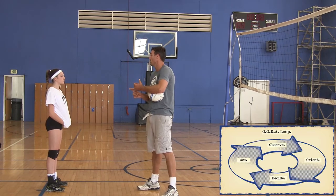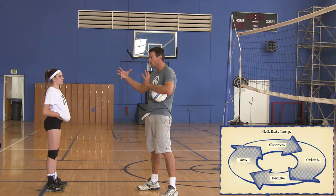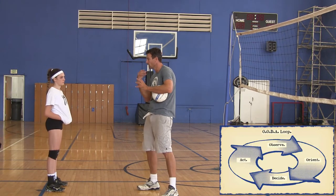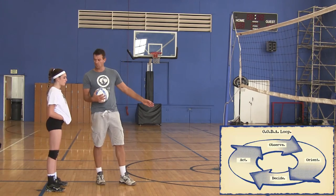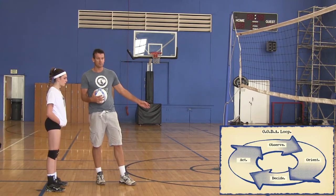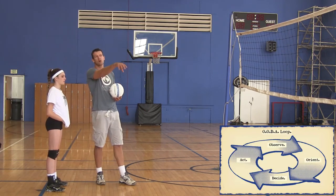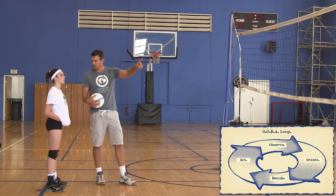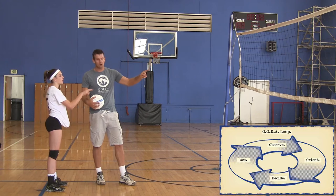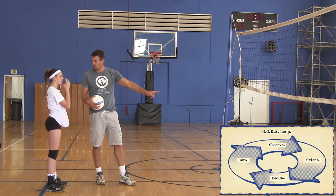Next, what are you going to do is Orientate. Orientate is processing that information. So I'm processing the information — oh, this blocker is all the way down on the line. What does that mean? I'm processing the information — oh, the blocker jumped with the middle. That means you only have one blocker.